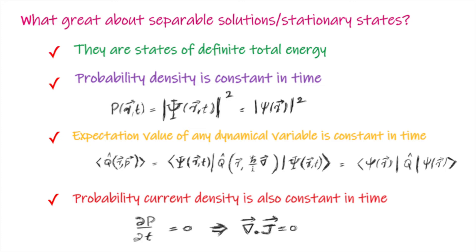And the last one is probability current density. In any stationary state, probability current density is also constant in time.